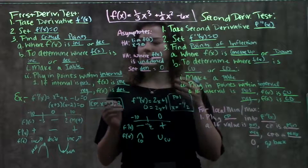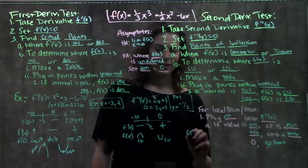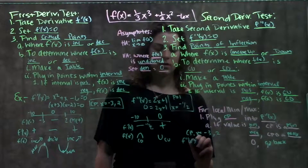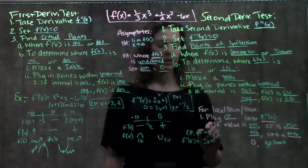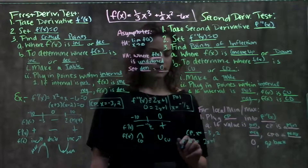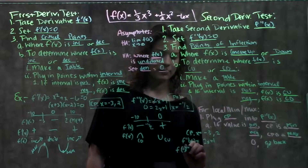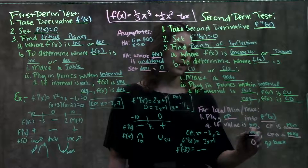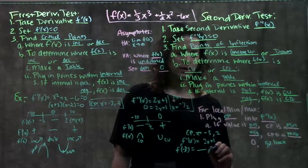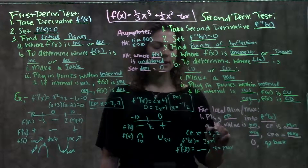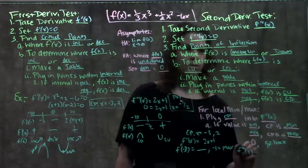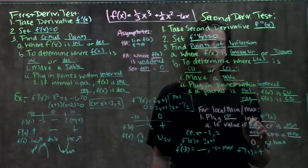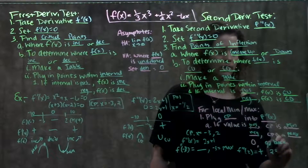Applying this to our function, our critical points were at x equals negative 3 and positive 2, and our second derivative was 2x plus 1. Plugging in negative 3, I get negative 6 plus 1, which is a negative value — that tells me the critical point at x equals negative 3 is a max. Plugging in positive 2, I get 4 plus 1, which is positive — that tells me the critical point at x equals 2 is a minimum. We can verify this using our first derivative.